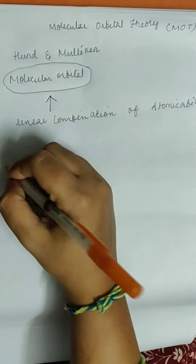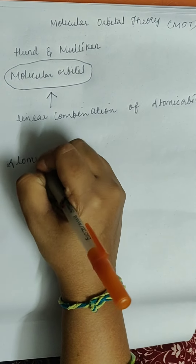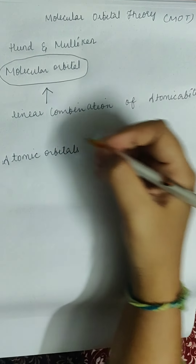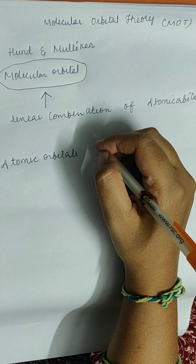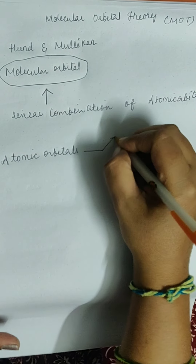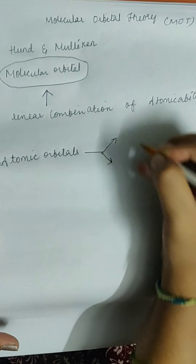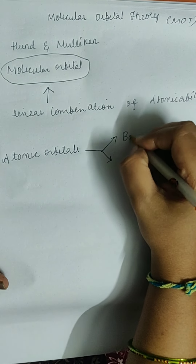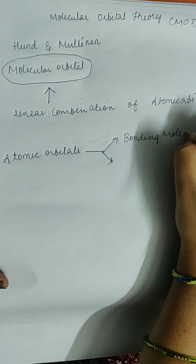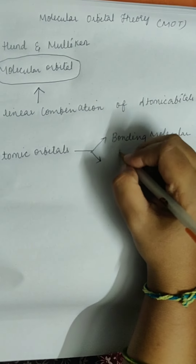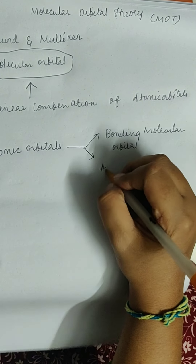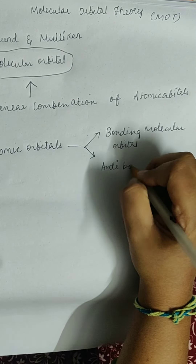These atomic orbitals give us two types of molecular orbitals: one is the bonding molecular orbital and the other is the anti-bonding molecular orbital.